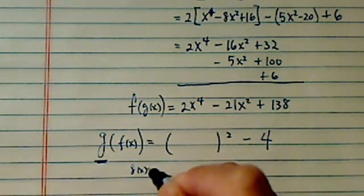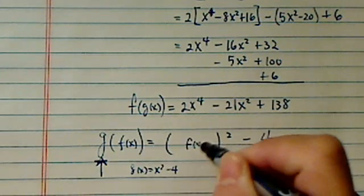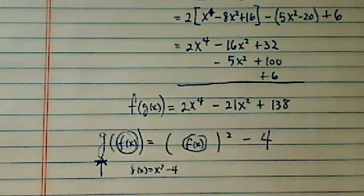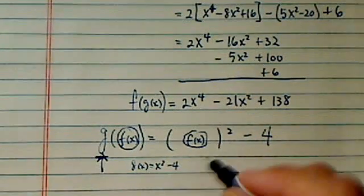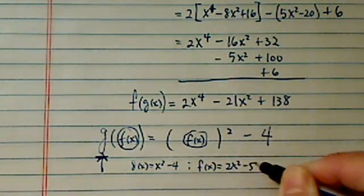So you take the form of function g first, since g was first, and then you put f(x) in there because f(x) becomes the independent variable. From there, you just substitute whatever f(x) equals: 2x² - 5x + 6.